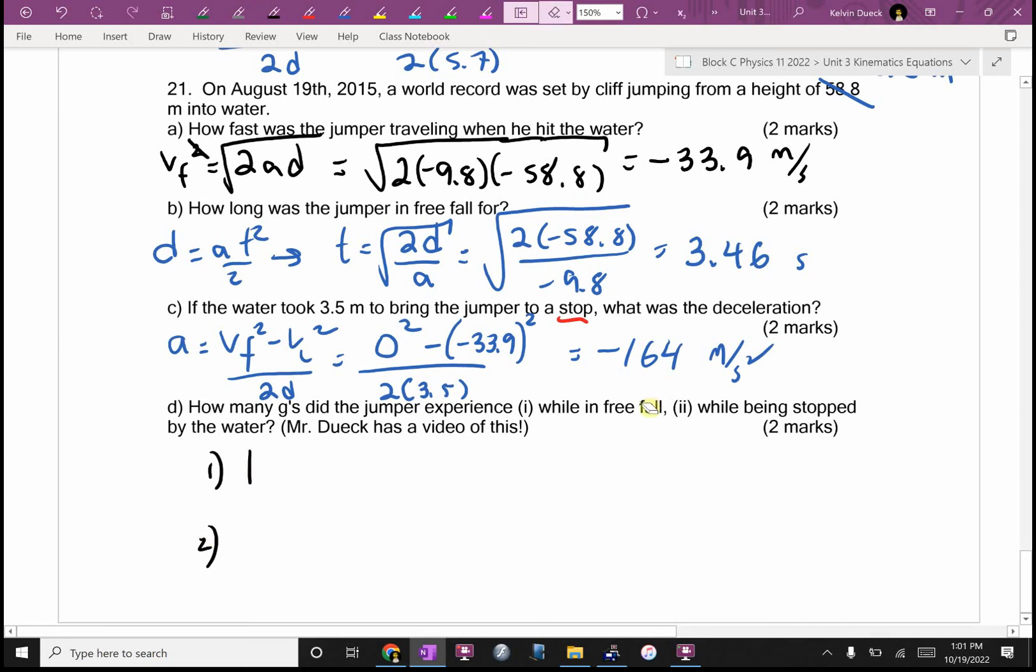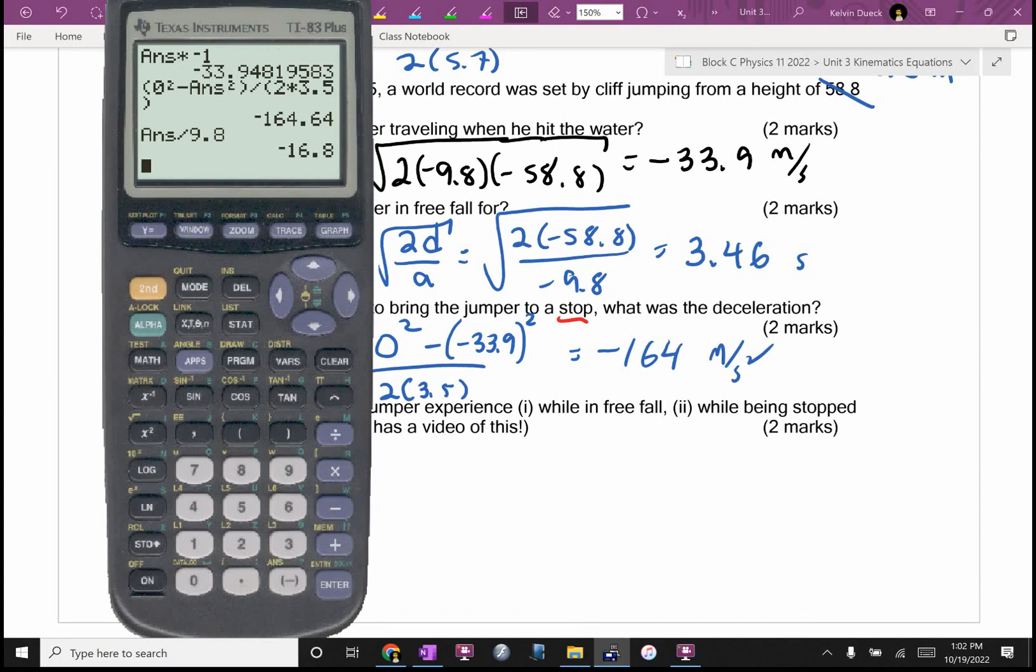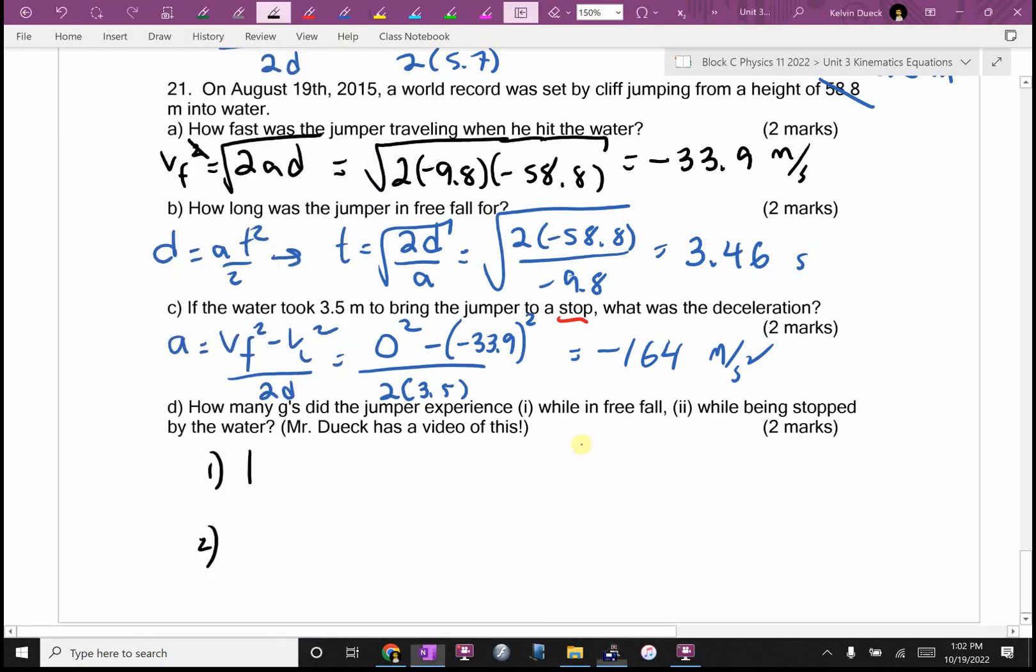How many Gs did the jumper experience while in free fall? Just one, because what's the only force acting on them? That's one G. How many Gs in the water? How do I convert this number to Gs? Divide by 9.8. I will ask you to do Gs tomorrow somewhere. Divide by 9.8. 16.8 Gs, negative because slowing down. Now, I've told you I'm fairly sure these numbers are accurate. Put your pencils down.